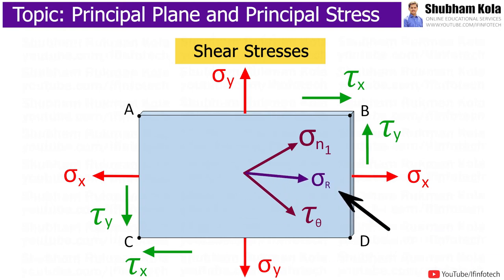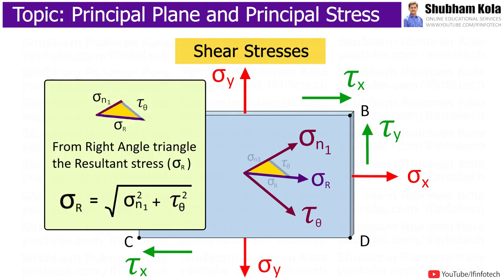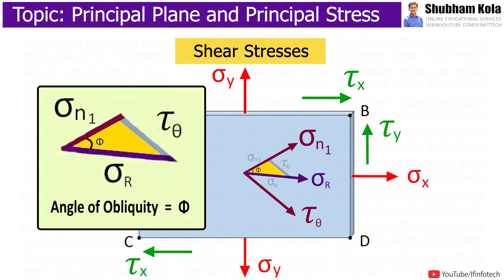Now, resultant stress sigma r on inclined plane is in between sigma n and tau theta. And I'll take line parallel to tau theta. So, from the right angle triangle, we'll get sigma r, that is resultant stress, which is equal to square root of sigma n squared plus tau theta squared. Now, angle of obliquity, that is phi, is the angle between sigma theta and sigma r.